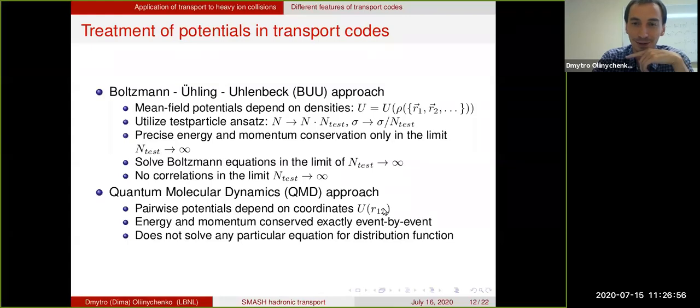If you think of the third Newton's law, the third Newton's law relies on the fact that potentials depend on coordinates. So in Boltzmann, Ulling, Ullenbech approach, third Newton's law is not really working. That means that you only have precise energy and momentum conservation only in the limit when the number of test particles is approaching infinity, when you actually reproduce the whole distribution function very precisely. This is not exactly happening in practice. So in BUU approaches you have slight but always energy and momentum violations.